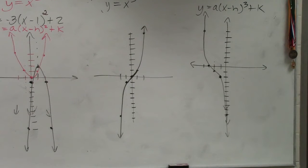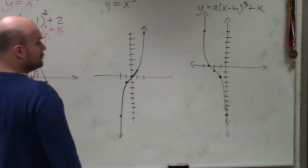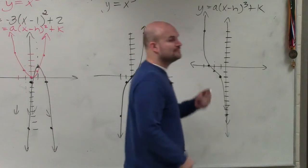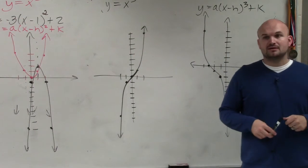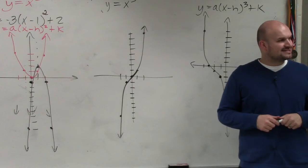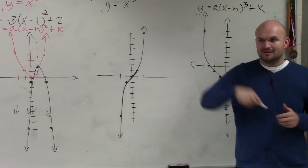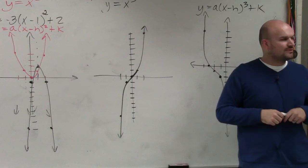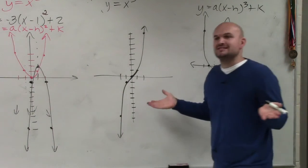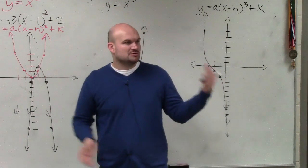Absolute value, we call that the v-graph, right? It looks like a v. The quadratic, we call that the u-graph, because it looks like a u. The cubic kind of looks like an s, it's kind of curvy like an s. So a lot of times we call that just the s-graph. It's not mathematical terms, but it's easy ways to kind of remember what those graphs look like.